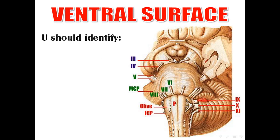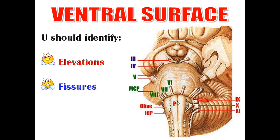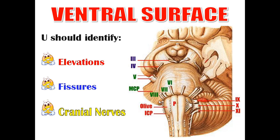This is the ventral aspect of the brain stem. What you should know about the ventral aspect includes elevations, fissures, and cranial nerves. Regarding the medulla, we have three elevations on each side of the median sulcus: the pyramid, and the inferior cerebellar peduncle, connecting the medulla with the cerebellum.